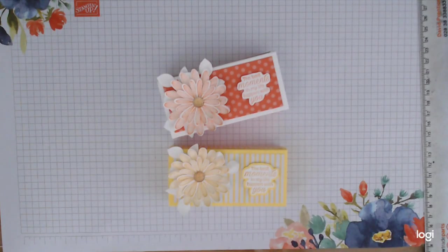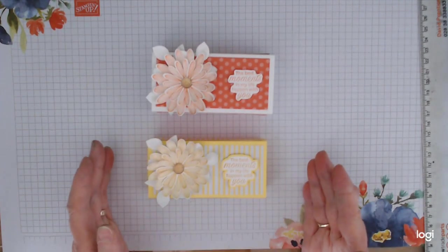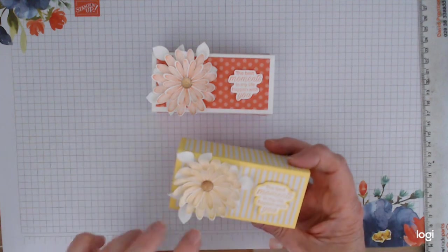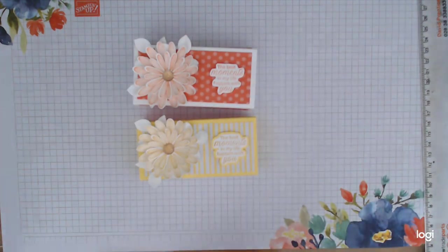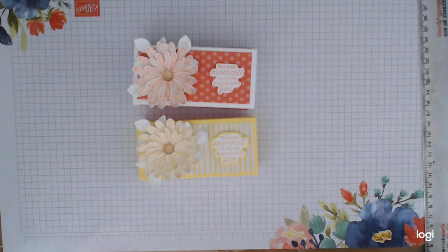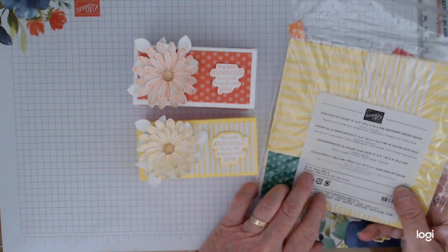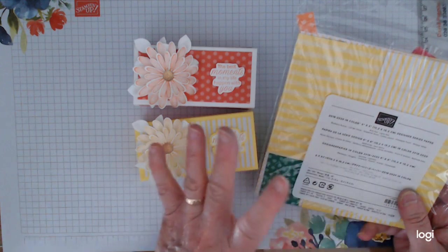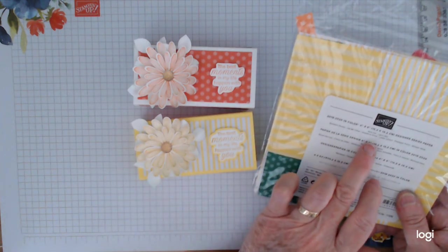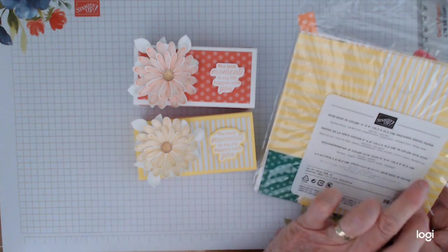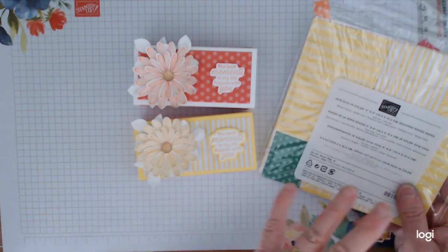Hello there, this is Patricia from Pinky Swirl. Today I'm showing you how to make these cute little slider boxes using the Daisy Lane punch and the lovely in colors that are slowly disappearing. It's going to be the end of the 2018 to 2020 in colors.